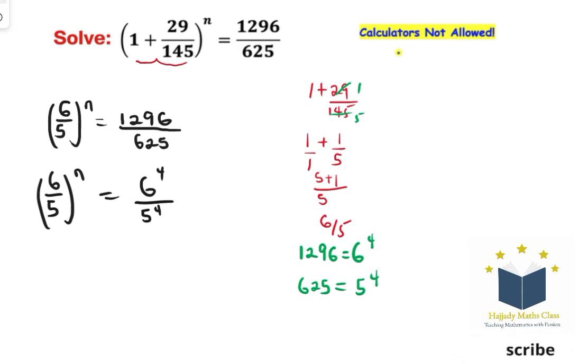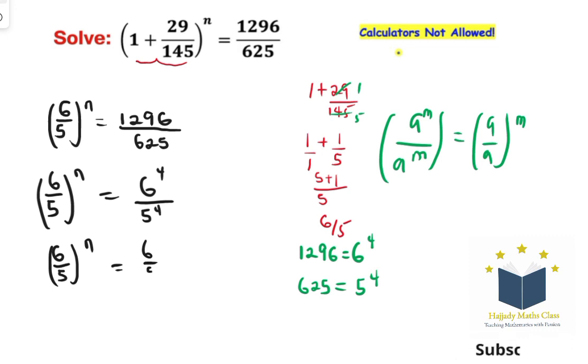And don't forget the rule of indices that says that a to the power of m over a to the power of n. So here I am going to have 6 over 5 to the power of n equals 6 over 5 to the power of 4.